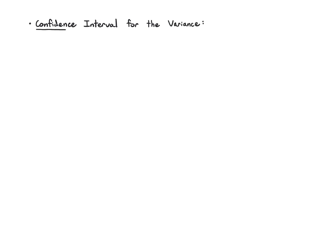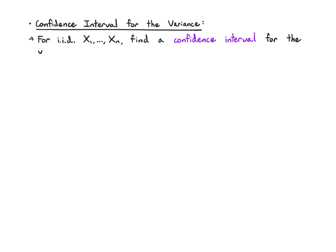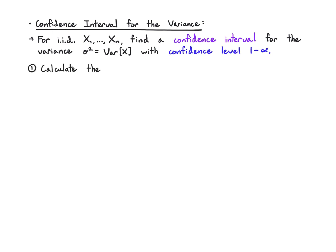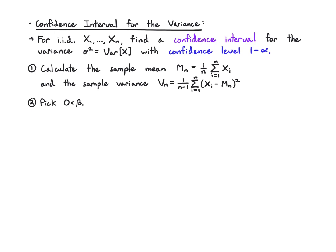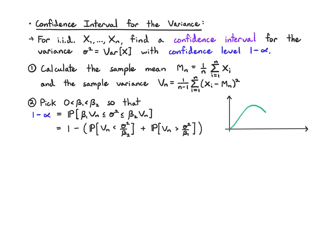The last topic is calculating a confidence interval for the variance. We take our data and instead of a confidence interval for the mean, we want one for the variance, with confidence level 1 minus alpha. We calculate both the sample mean and the sample variance exactly as before. Since we're after the variance, we deal with a different distribution. We pick beta1 and beta2 so that the probability that the interval from beta1 times the sample variance to beta2 times the sample variance captures the true variance is 1 minus alpha.